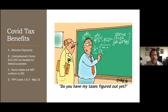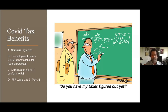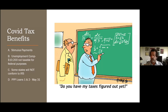Regarding unemployment compensation: if any of you received unemployment compensation in 2020, the first $10,200 is not taxable. The IRS will fix this automatically and refund any overpaid tax. If you had federal taxes withheld on unemployment benefits, the $10,200 exclusion will come back to you as extra money. Note that some states will not conform to the IRS non-taxable $10,200 exclusion.